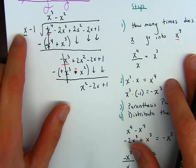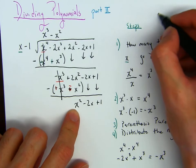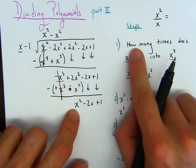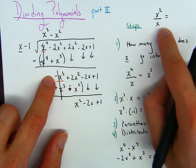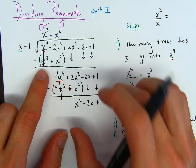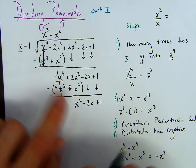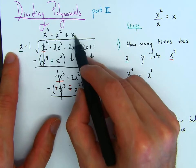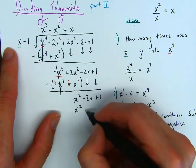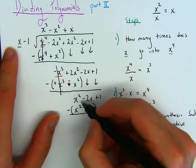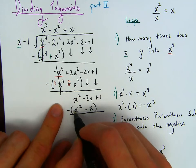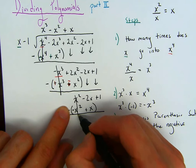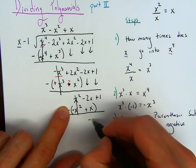We repeat the pattern: how many times does x go into x squared? x squared is on top, x is on the bottom — it goes in x times. So I bring that x over here. Then we multiply: x times x is x squared, x times minus 1 is minus x. Parentheses, parentheses, subtract. We distribute the negative — this positive becomes negative, this negative becomes positive. So x squared minus x squared cancels. Negative 2x plus x is negative x, plus 1.